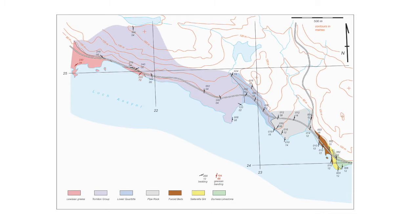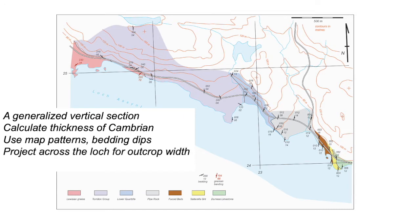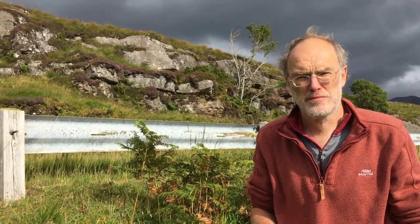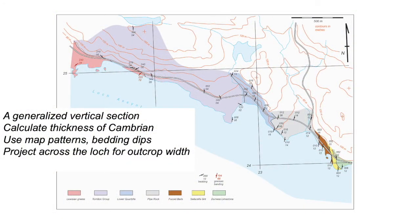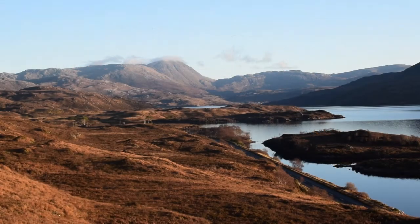Now let's look at the field map. Our mission is to draw a generalised vertical section through the Cambrian units, using the map pattern to do this. We're going to calculate the thickness of the Cambrian strata through simple map analysis using the map pattern and the bedding dips. We'll take the boundaries down to the loch side and use the outcrop width measured at the datum of the water level. We can only apply this idea to the main Cambrian successions and not to the limestones. We also want to draw a cross section showing the relationship between the Lewisian, the Torridonian, and the Cambrian strata, and demonstrate conformable or unconformable relationships by plotting bedding on a stereonet. Good luck.